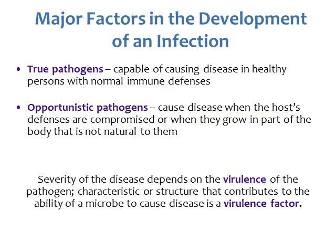So the major factors in the development of infections — we're going to be looking at pathogens, which are agents that have the potential to cause disease. Some pathogens are called true pathogens; they're capable of causing disease in healthy persons with normal immune defenses. True pathogens include the cold virus or influenza, so even if you're normally healthy, if you pick up one of those viruses, you're probably going to end up getting sick.